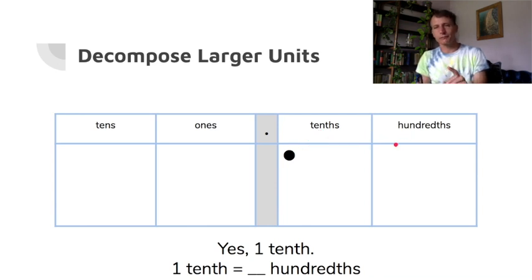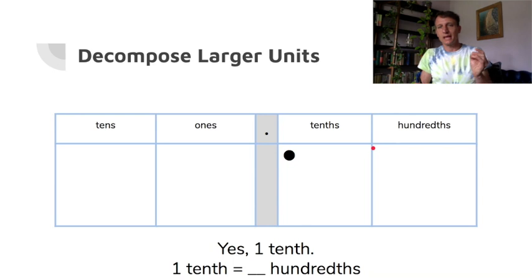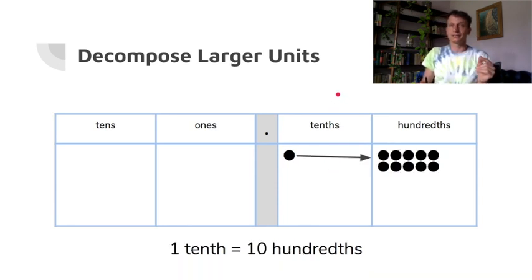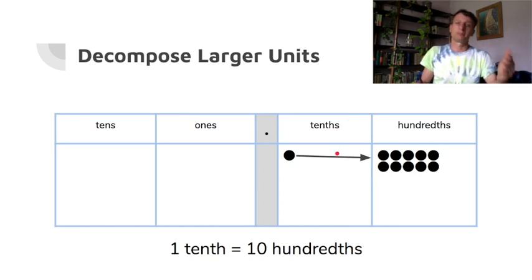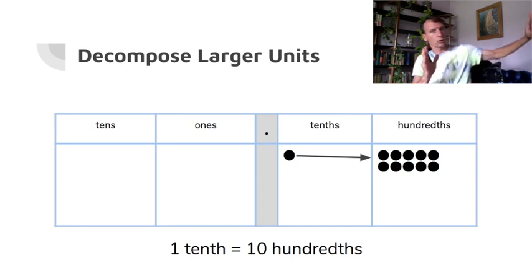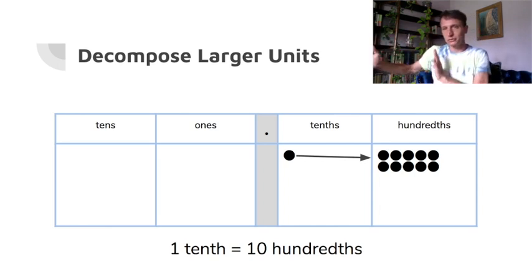Now we have one tenth. How many hundredths is that? You might be tempted to say a hundred, but stop and think — one dime equals how many pennies? Ten cents. So ten hundredths make a tenth. You can think of the decimal point almost as a mirror: going up the place value chart to millions and billions, values get larger; going down, values decrease.